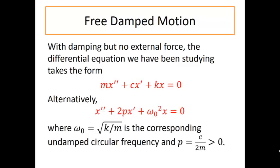Alternatively, we can rewrite this equation. If we divide through by the mass M, we can rewrite this equation as X double prime plus 2PX prime plus omega naught squared X equals zero, where omega naught is the square root of K divided by M, the corresponding undamped circular frequency that we saw in the last video. And P is C divided by 2M.